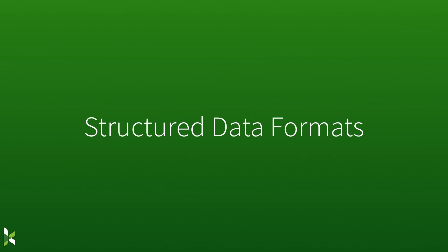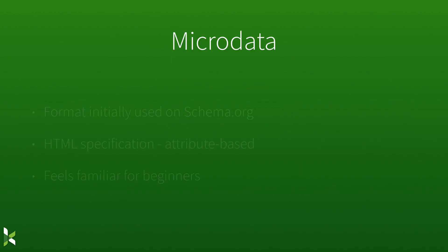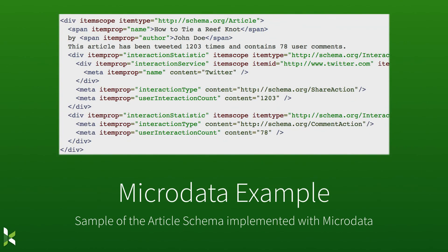I mentioned structured data formats — this is the how, this is how we start to get structured data implemented in the context of our websites and our pages. There are three main types of structured data formats that are in play. The first one and the granddaddy is Microdata. Microdata is the format that schema.org originally used. It is an HTML specification — it's attribute-based. So when you're writing out your HTML tags, there are literally additional attributes that you will add into the markup to add schema definitions to your content. Because of that context it feels pretty familiar, and if you've never messed with this before and you just want to experiment, Microdata can be a good place to start.